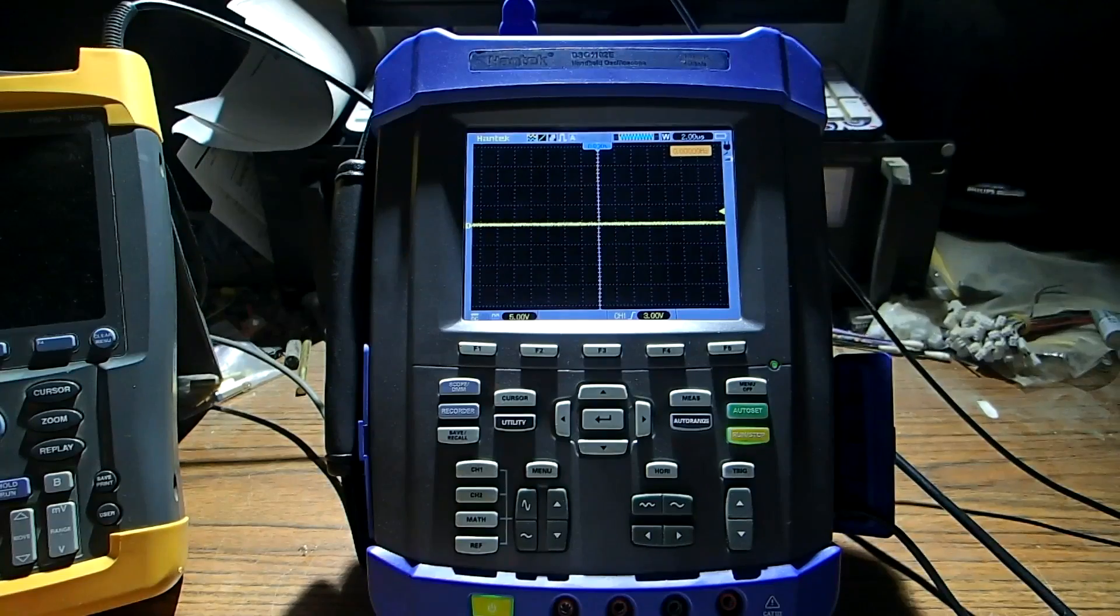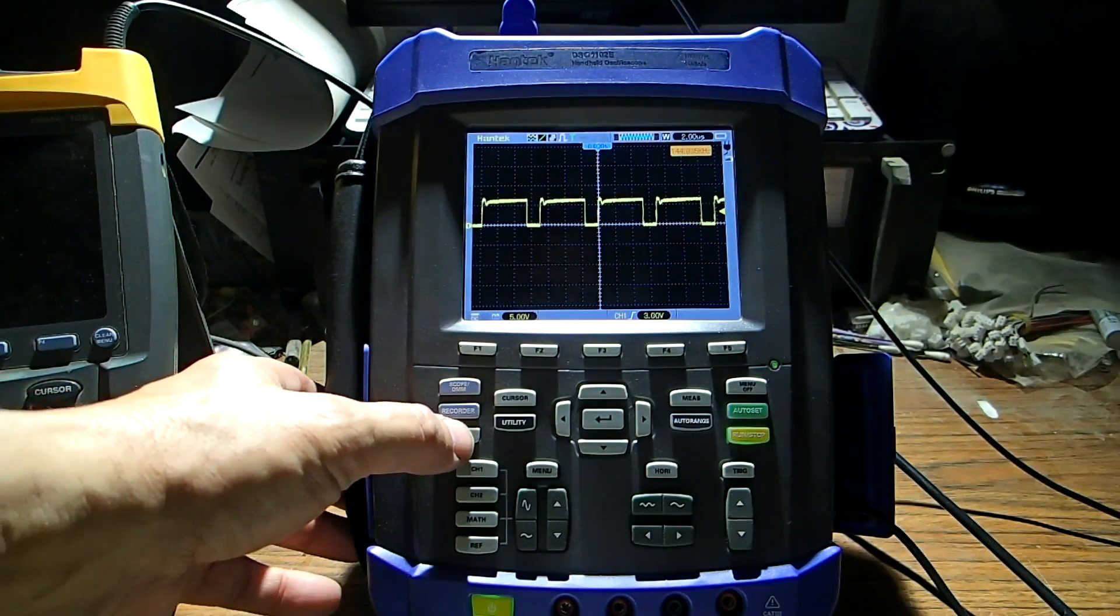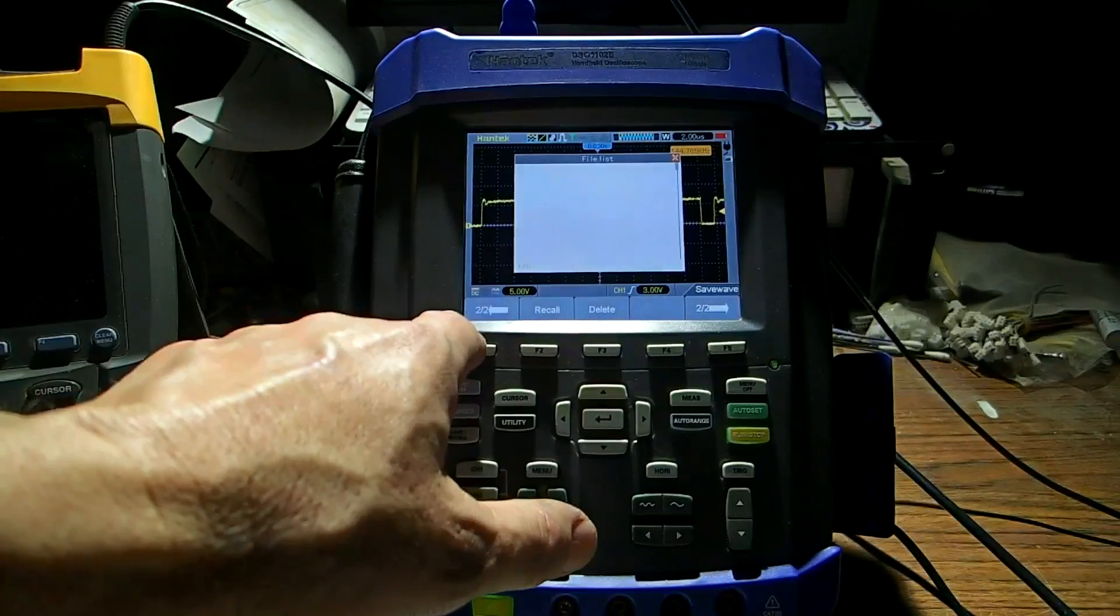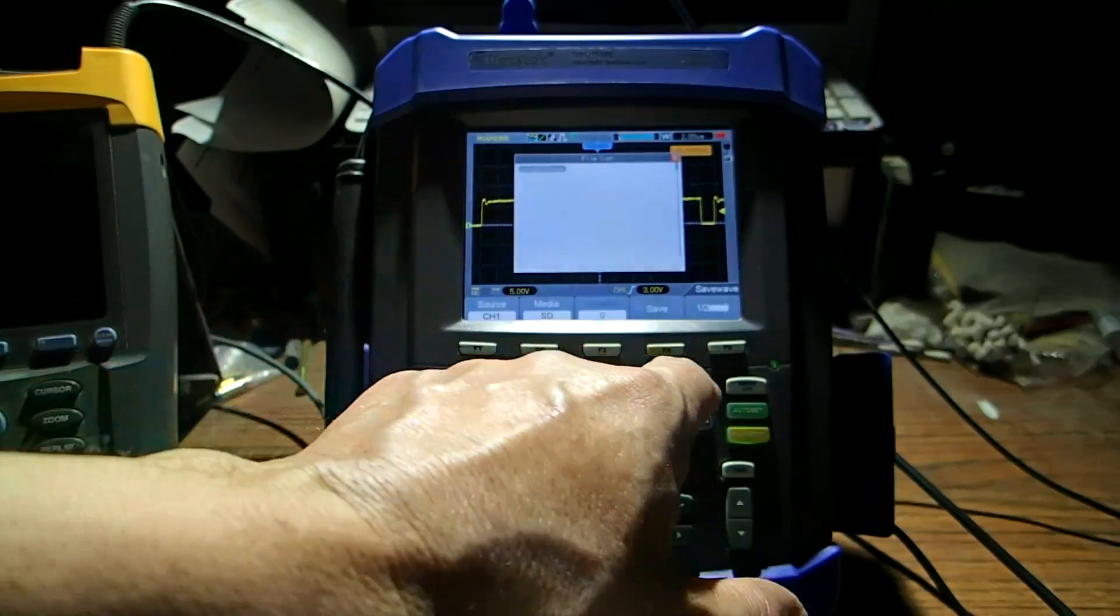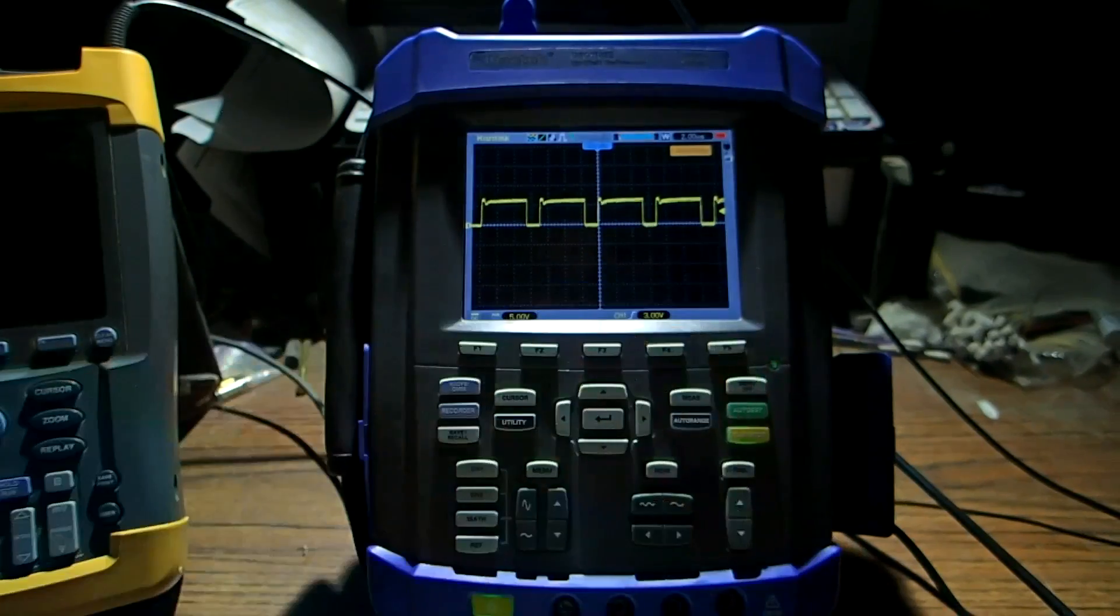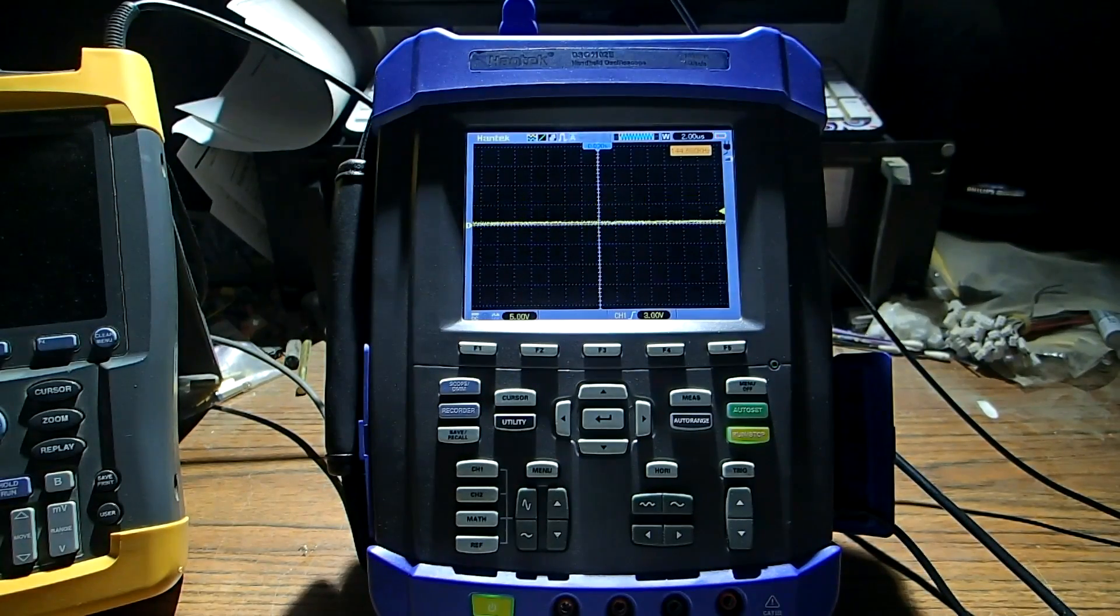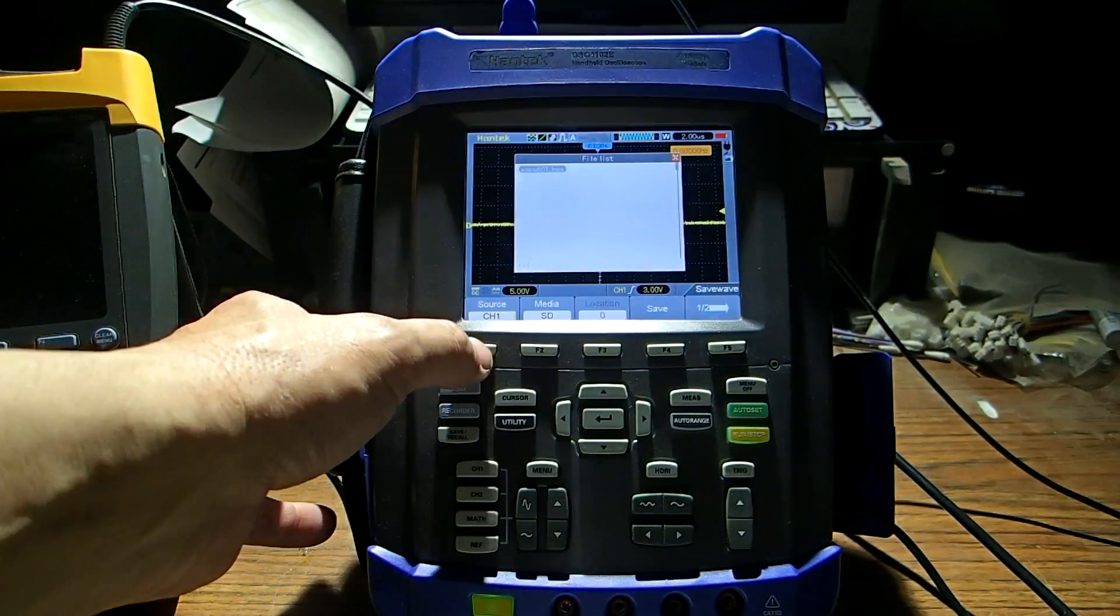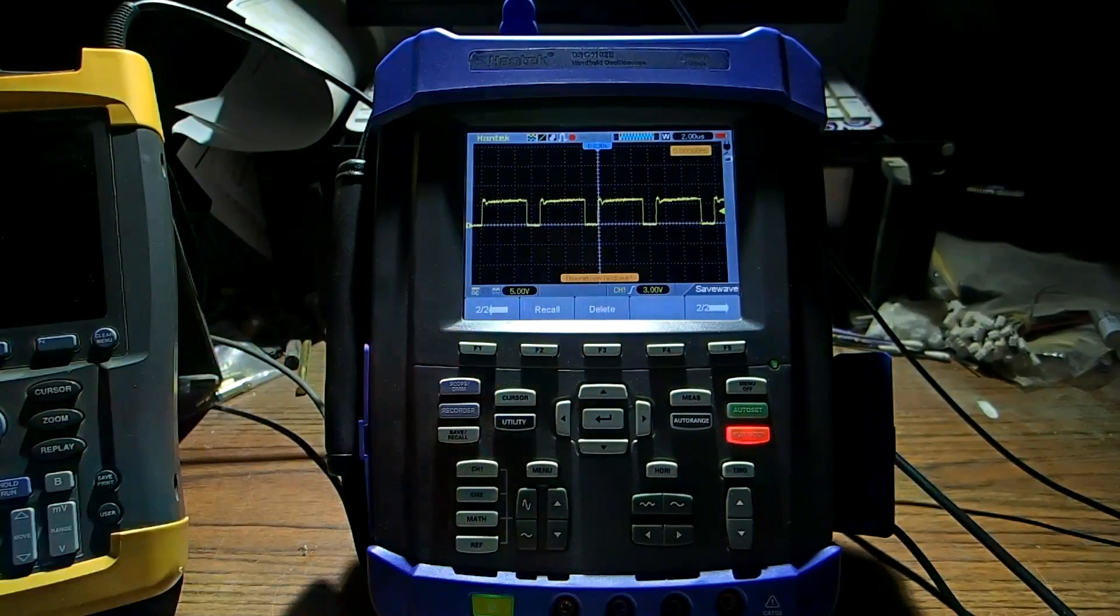Just like the Fluke scope it has save and recall features. So basically I got the generator on. If I want to save this press the save recall button. Then you press wave. Then you got to press this to hit save. And then there's your file. Now to get out of this you got to press save recall again and then menu off. Now we're looking at the input signal. So let's get rid of it. Now let's go back and see if we can recall the wave. Go to wave and then recall. And there it is.